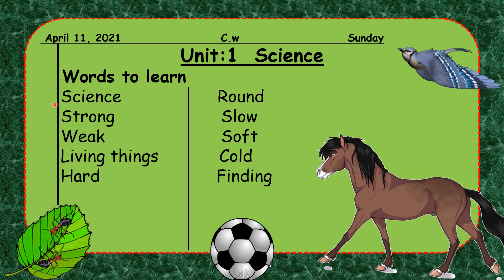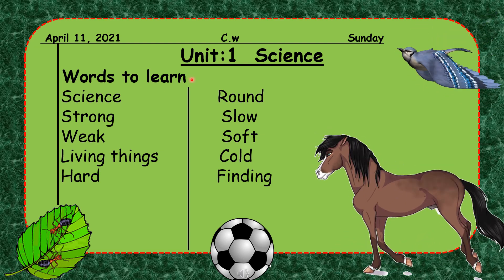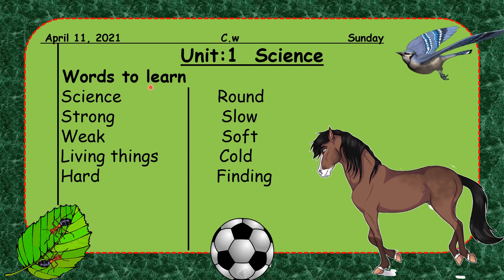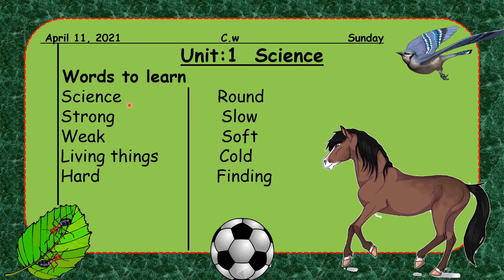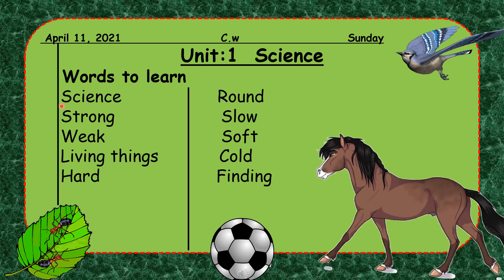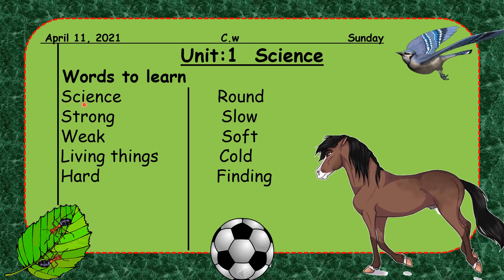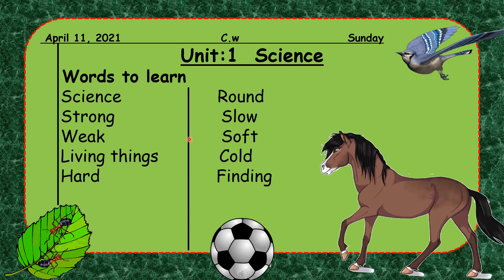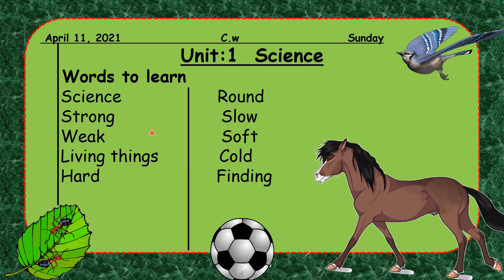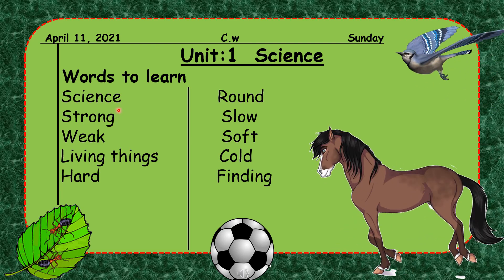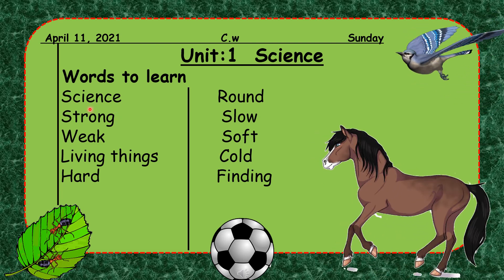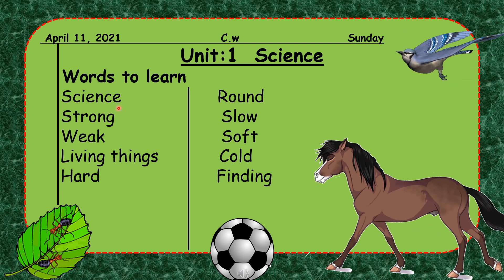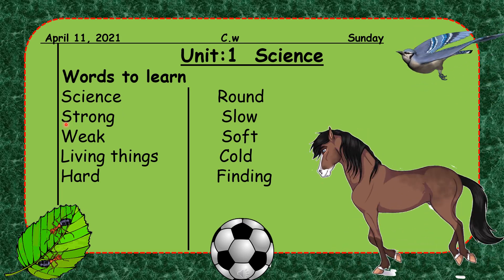In the first line write 'Unit 1 Science,' in the second line write 'Words to Learn,' then from the third line start writing your words. If you have more words than page lines, draw a center line and write half the words on each side. Our first word is: science — S-C-I-E-N-C-E. Second word: strong — S-T-R-O-N-G. Third word: weak — W-E-A-K.